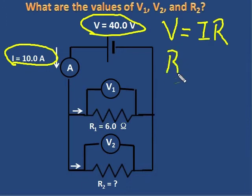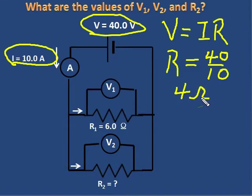Therefore, the total resistance is simply V over I, which is 40 over 10, which is an incredibly easy calculation. The total resistance of that parallel portion is 4 ohms.